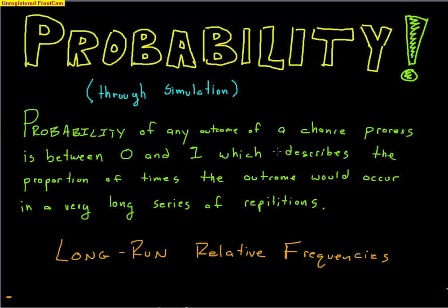First off, what is a chance process? A chance process is any event where you don't know the final outcome, like flipping a coin — I don't know if it's going to be heads or tails — or rolling a die — I don't know if it's going to be a 1, 2, 3, 4, 5, or 6. So when we talk about an individual outcome, we say that its probability is between 0 and 1: 0 meaning it will never occur, and 1 meaning there's a 100% chance it will occur.